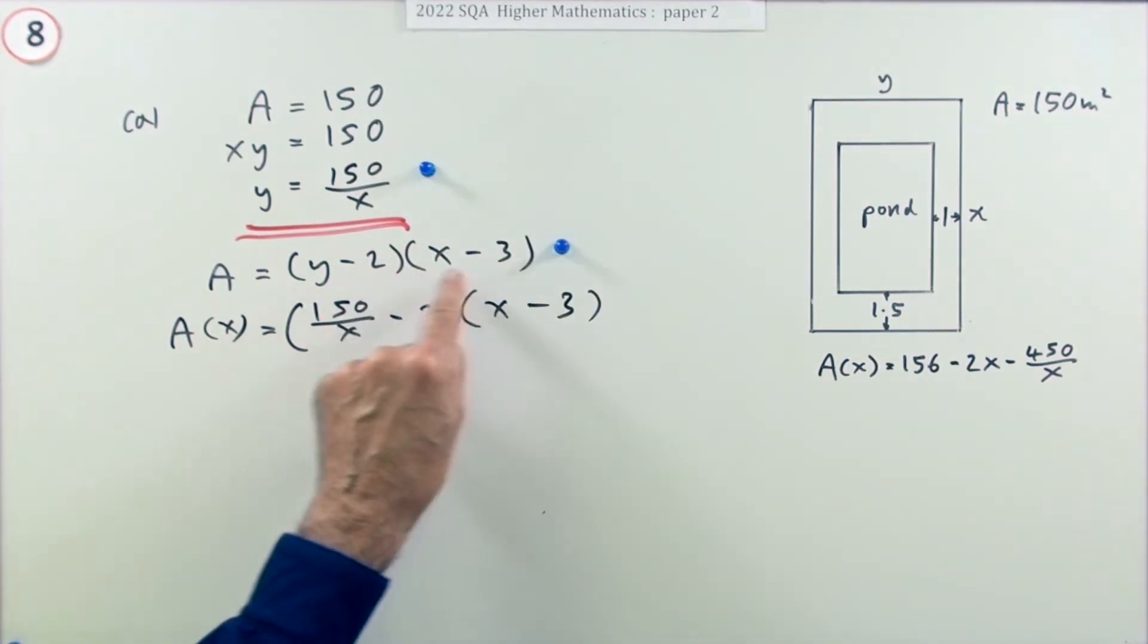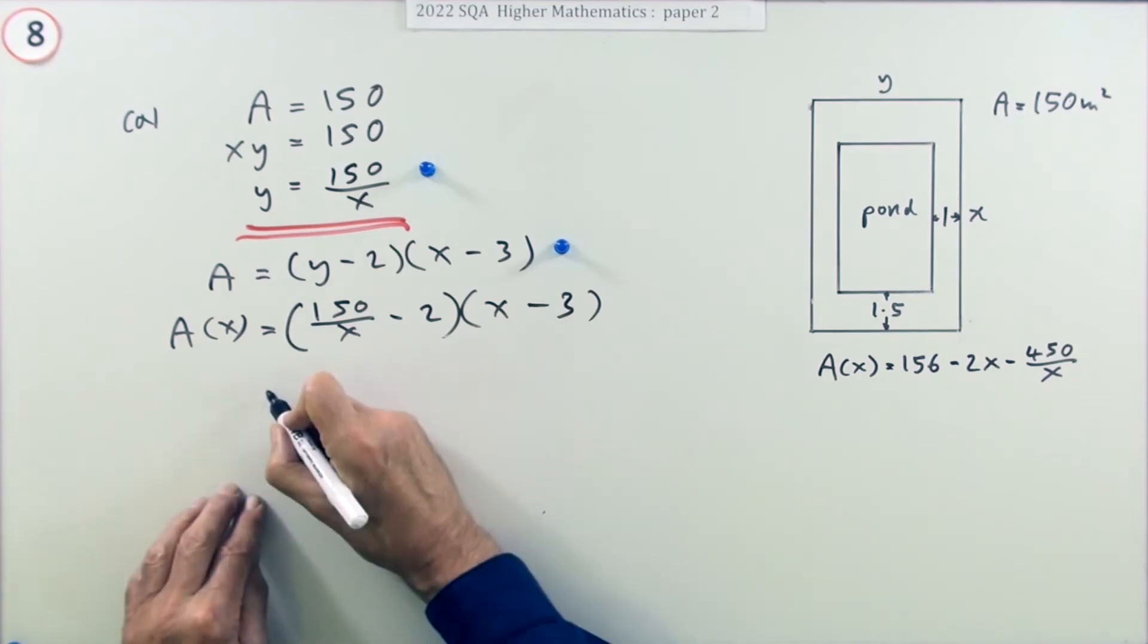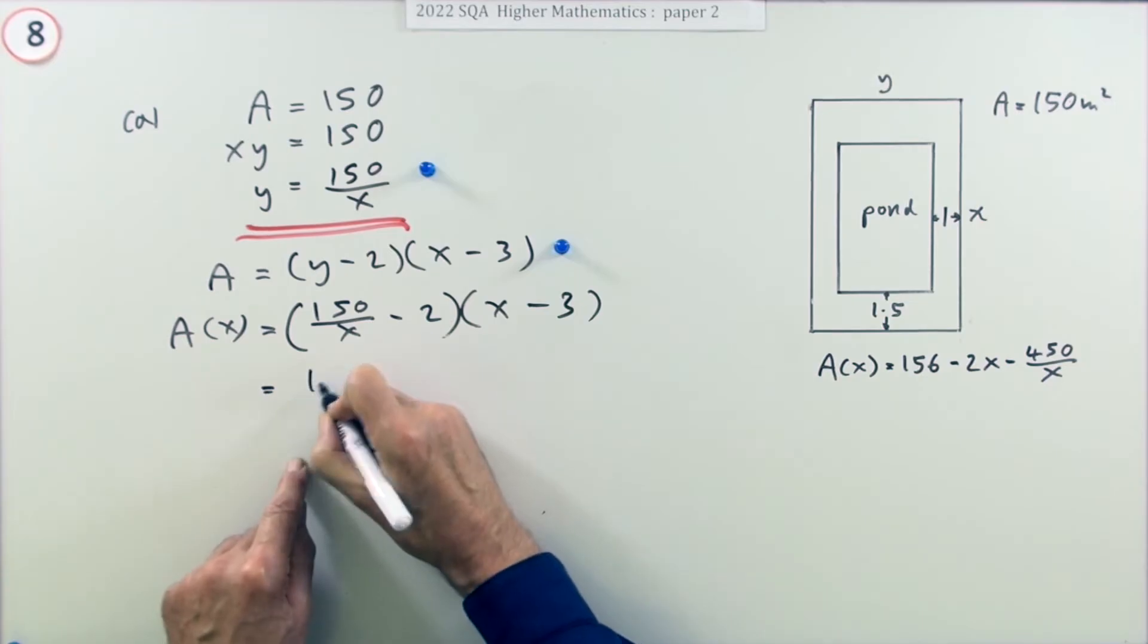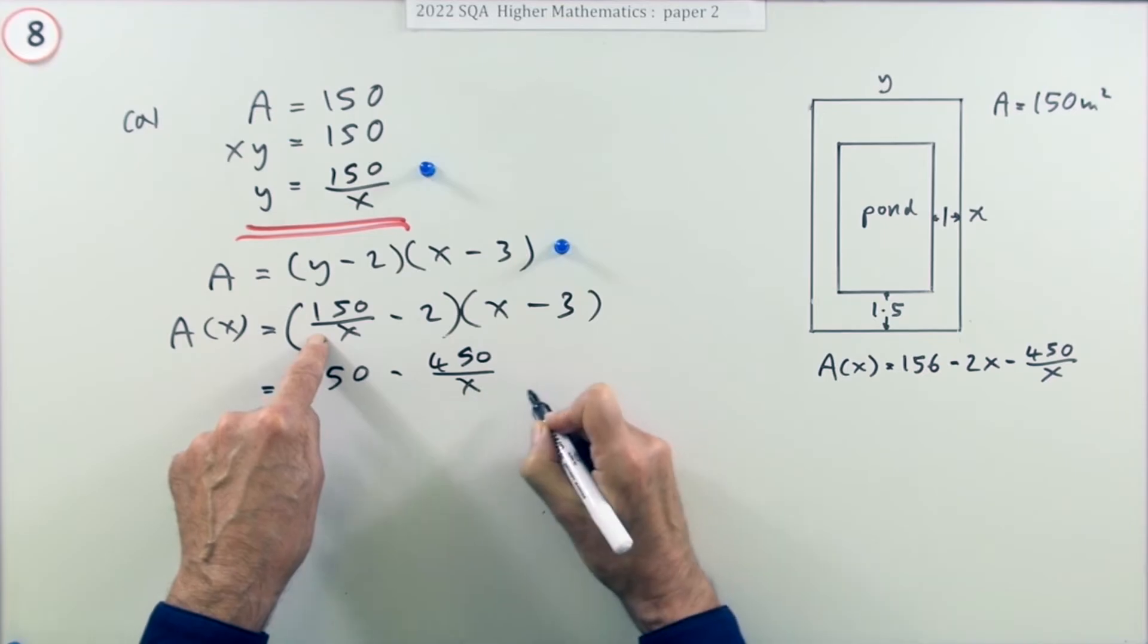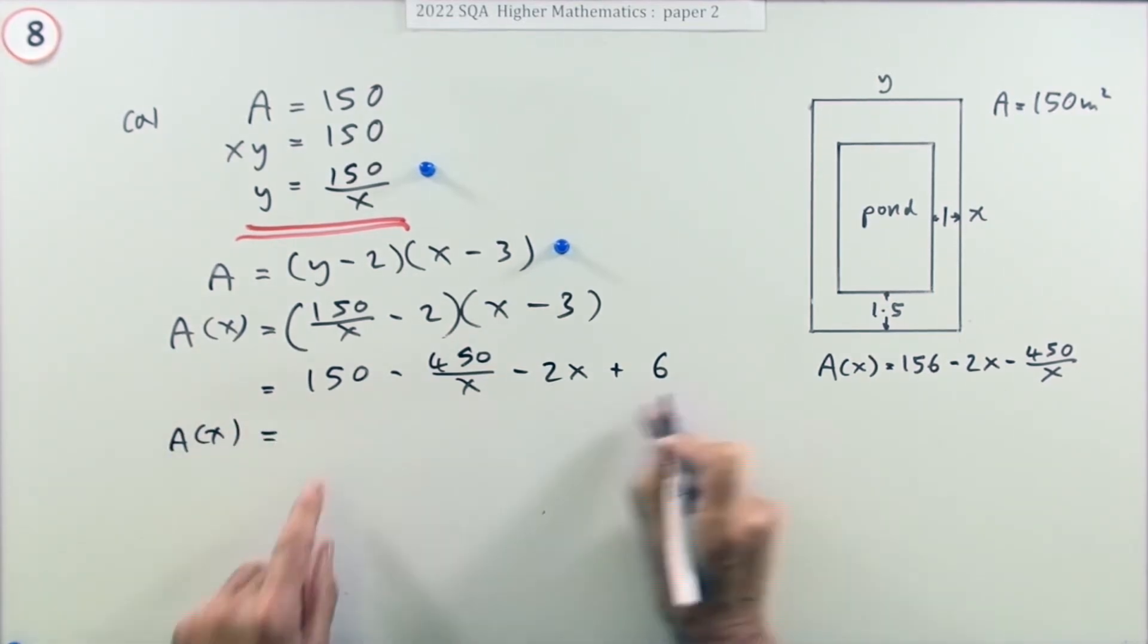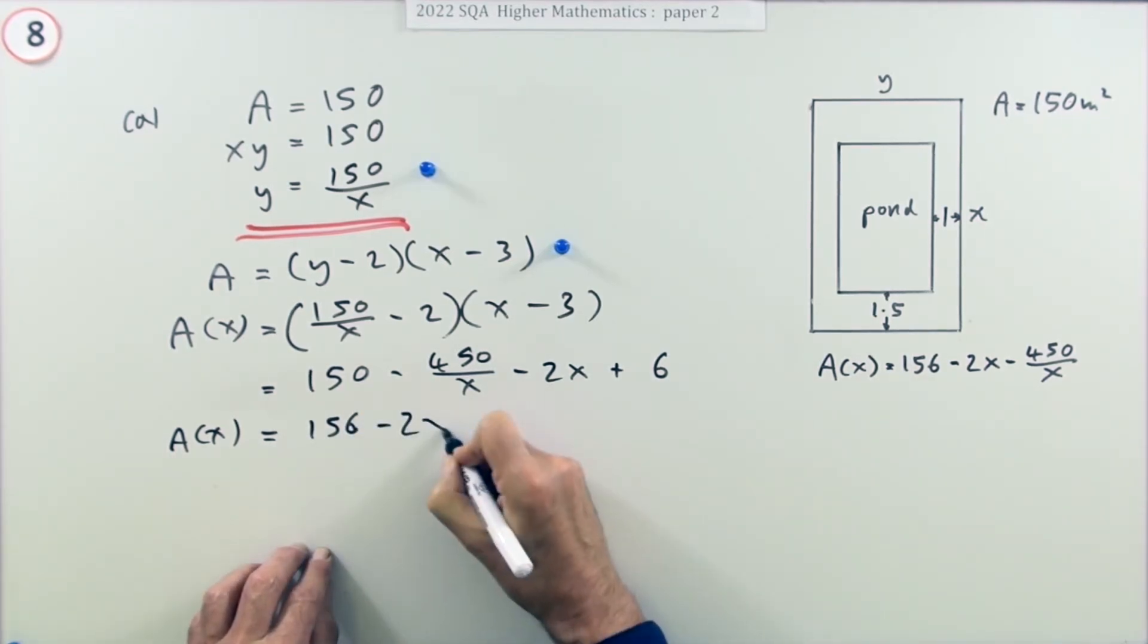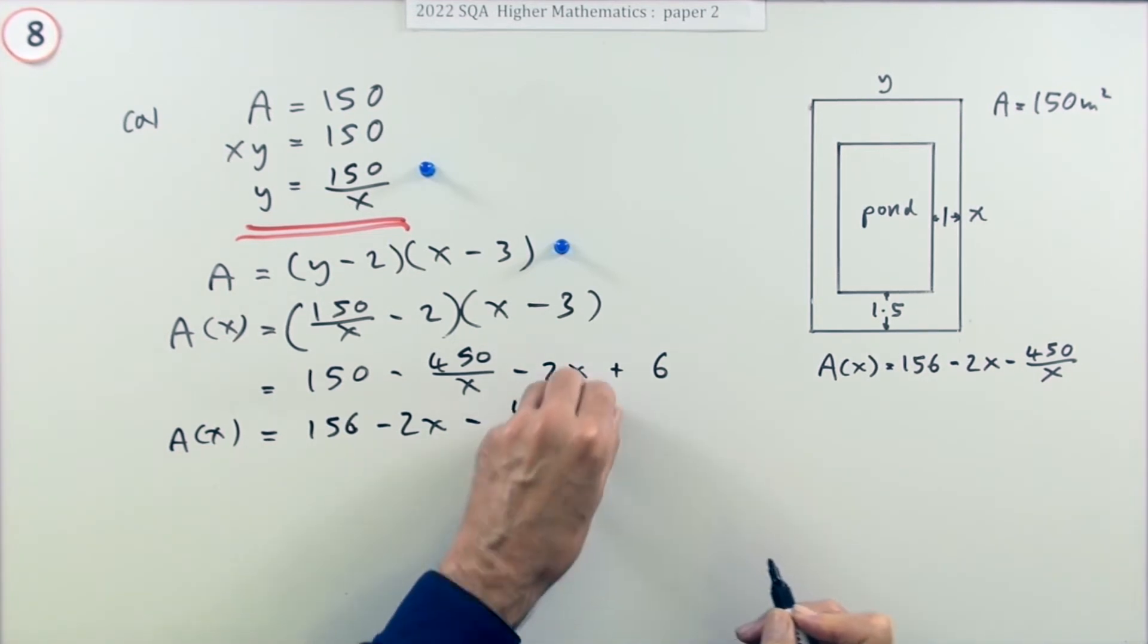The last mark's just for rearranging it all. Multiplying that out: x times x cancel, so that's 150, minus 450 over x, minus 2x, plus 6. Rearranging it into that order, A(x) should equal: put those two together, 156, minus 2x, minus 450 over x, as required.